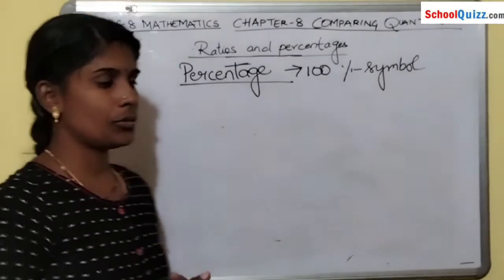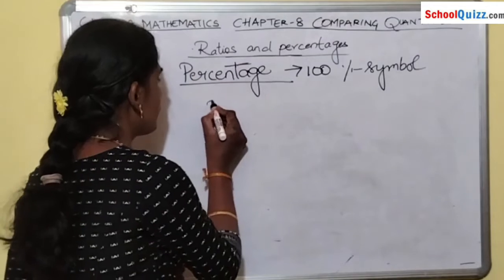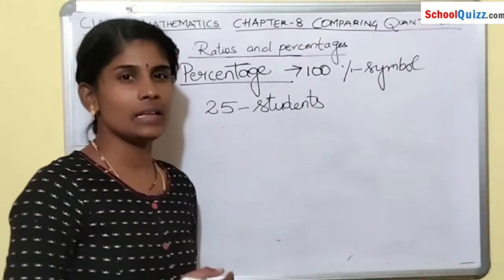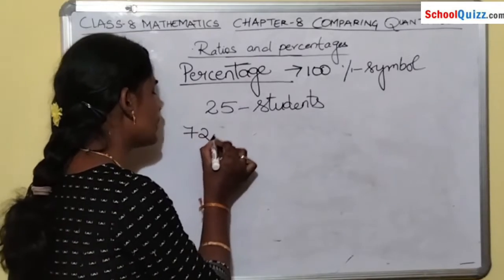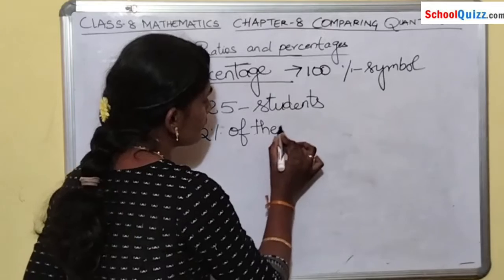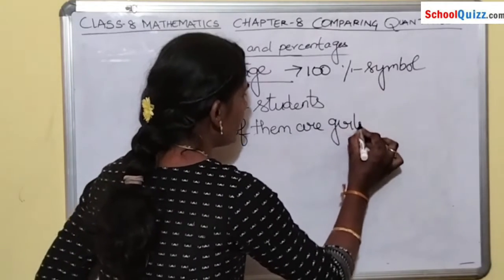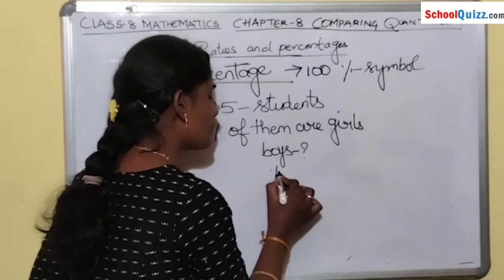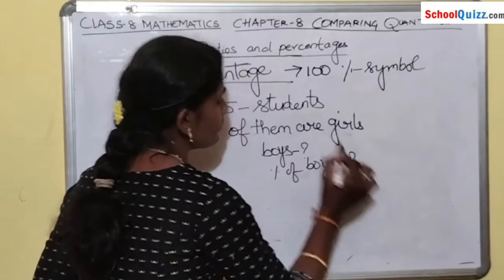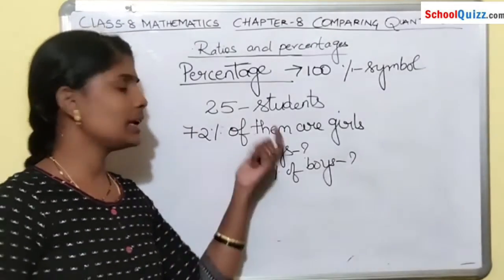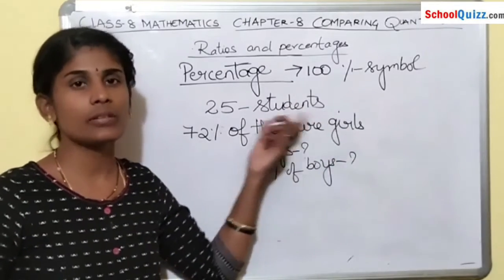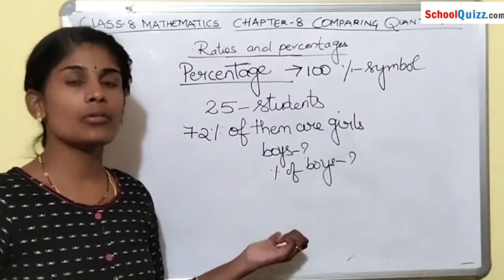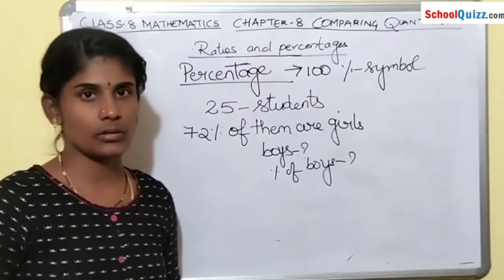Now let me explain a problem. In a class there are 25 students total — girls and boys combined. Out of 25 students, 72% of them are girls. We need to find how many boys there are and also find the percentage of boys.